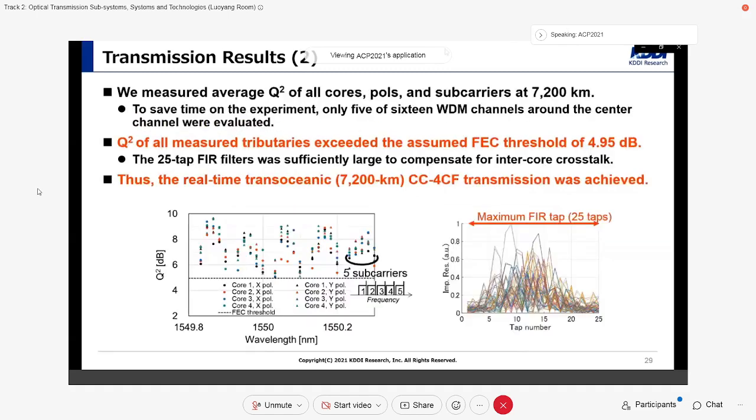We measured average Q-factor of all cores, polarizations, and sub-carriers at 7200 km. Here, to save time on the experiment, only 5 of 16 WDM channels around the center channel were evaluated. Q-factor of all measured tributaries exceeded the assumed FEC threshold of 4.95 dB. The 25-tap FIR filter was sufficiently large to compensate for inter-core cross-talk as we expected. Thus, the real-time trans-oceanic coupled four-core fiber transmission was achieved.